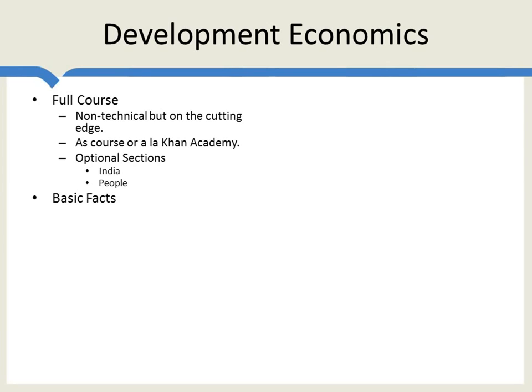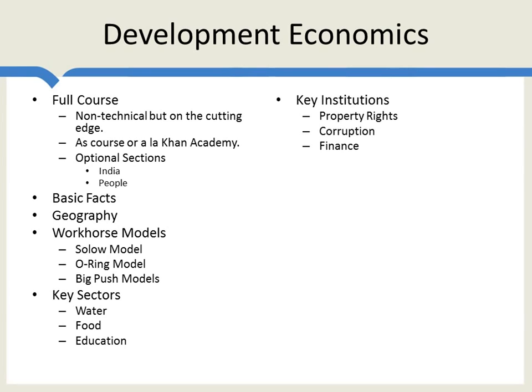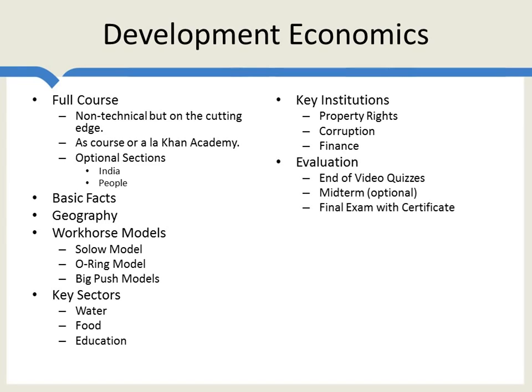We begin the course with some basic facts of Development Economics. We look at some of the most fundamental causes of the wealth of nations, such as geography. We look at some of the workhorse models in the field, such as the Solow model of economic growth, the O-ring model, and big push models. We look at some key sectors — water, food, education — and some key institutions: property rights, corruption, and finance.